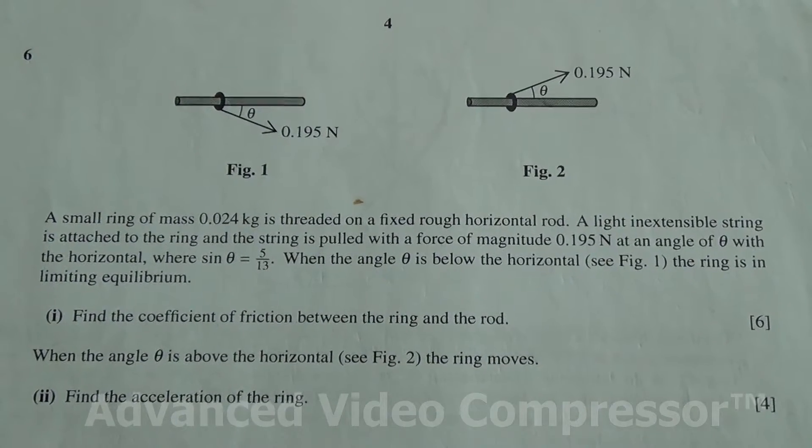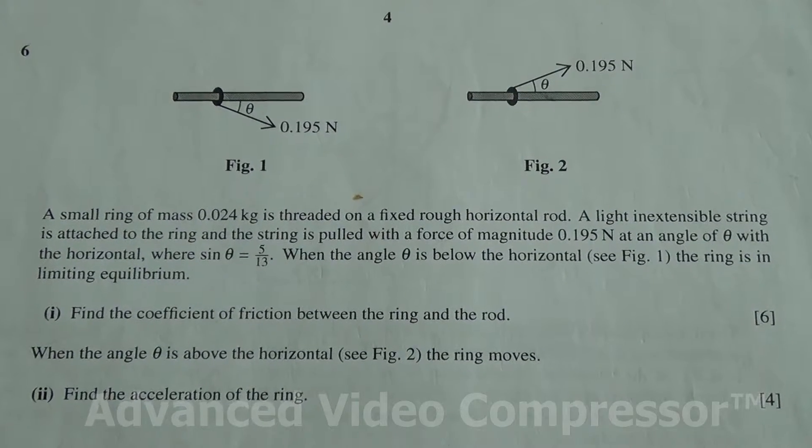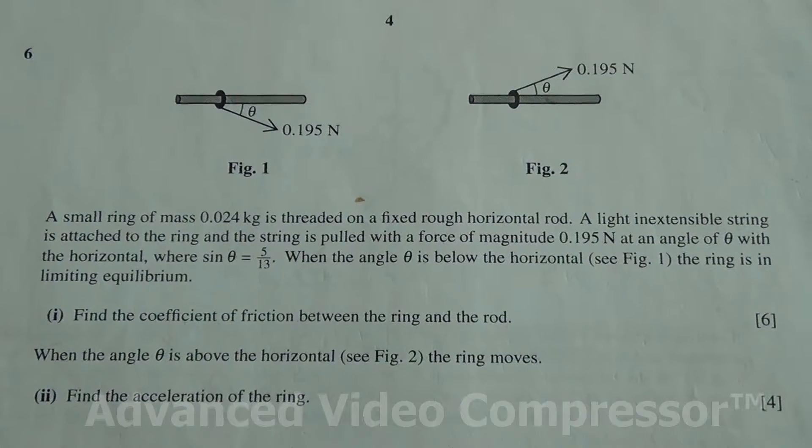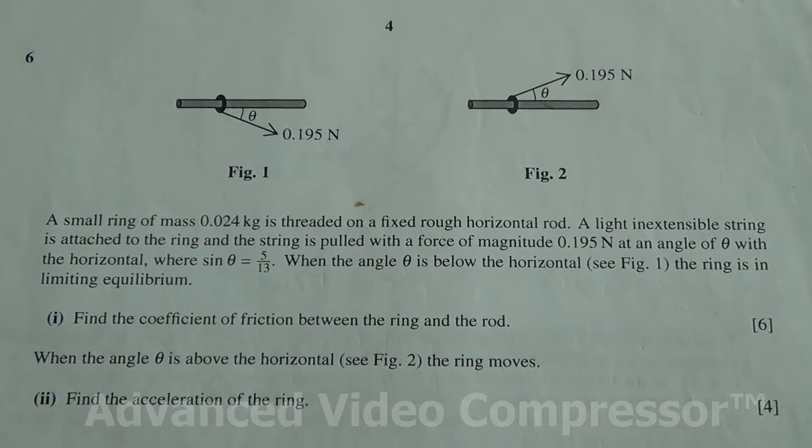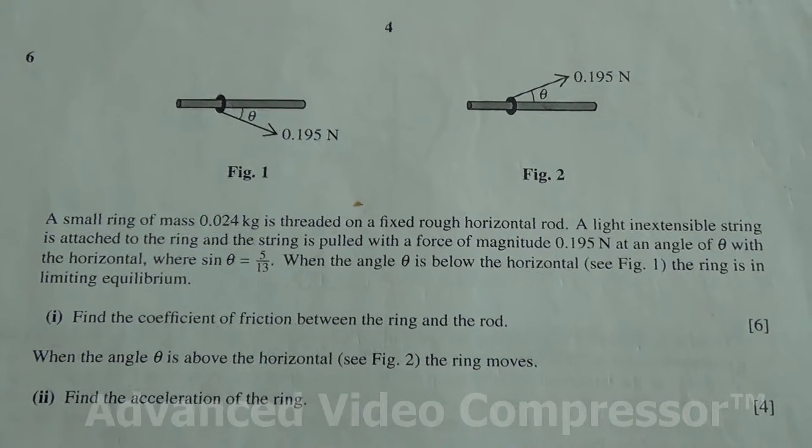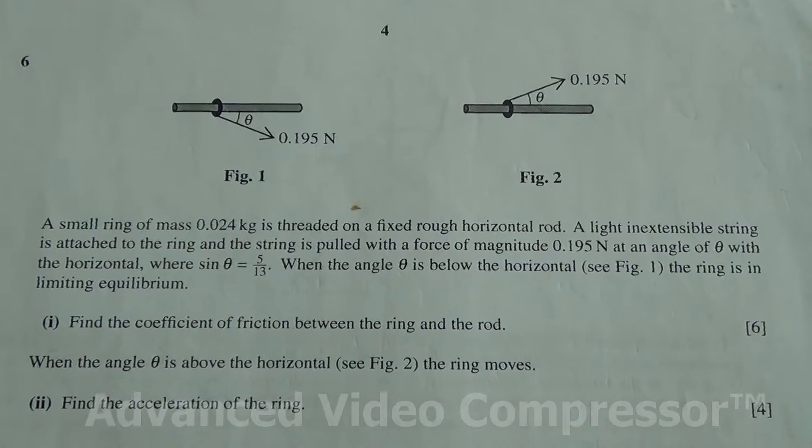Find the coefficient of friction between the ring and the rod for the first part. And the second part, when the angle theta is above the horizontal in figure 2, the ring moves. Find the acceleration of the ring.